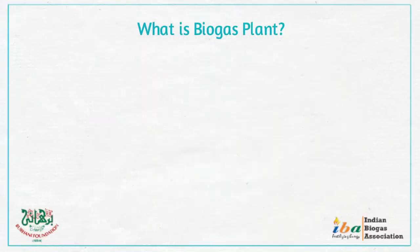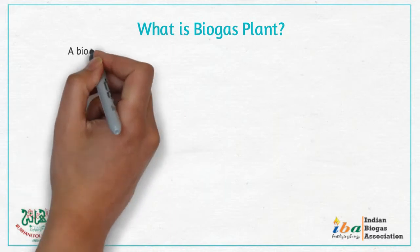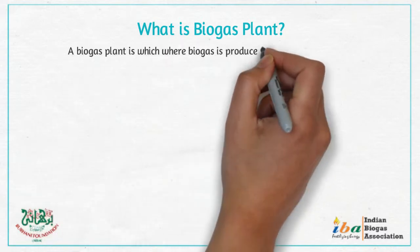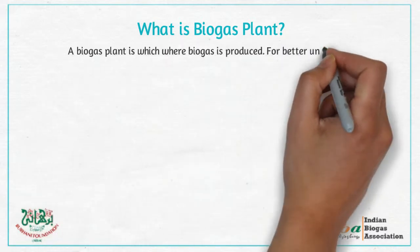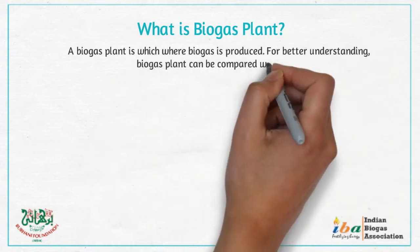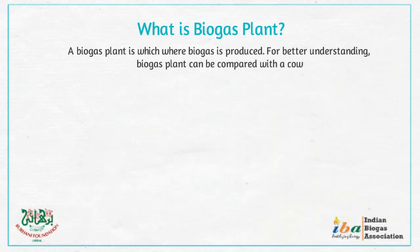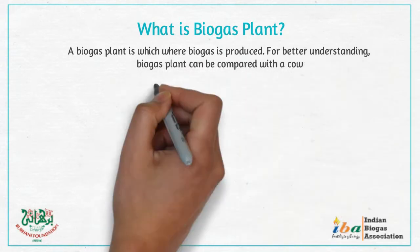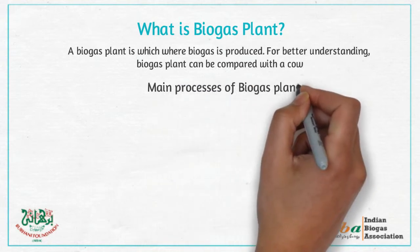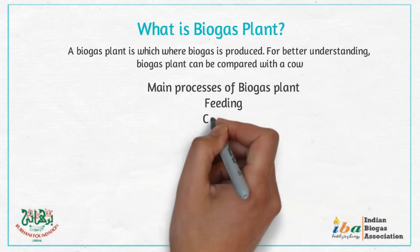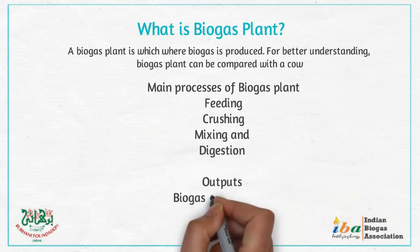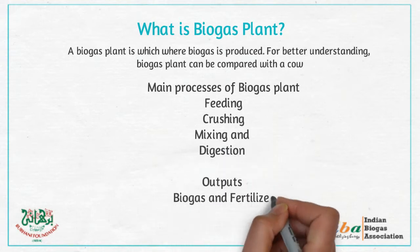What is biogas plant? A biogas plant is where biogas is produced. For better understanding, a biogas plant can be compared with a cow. In a biogas plant we have processes such as feeding, crushing, mixing and digestion, and as an output we get biogas and fertilizer.